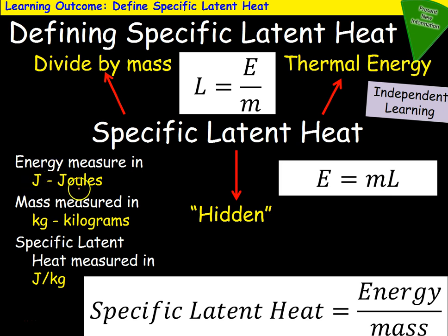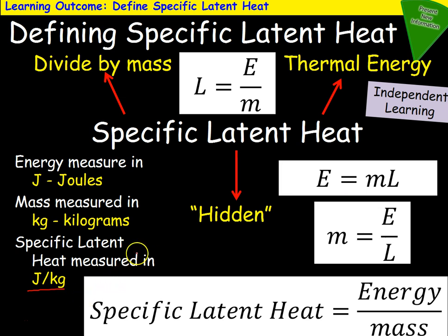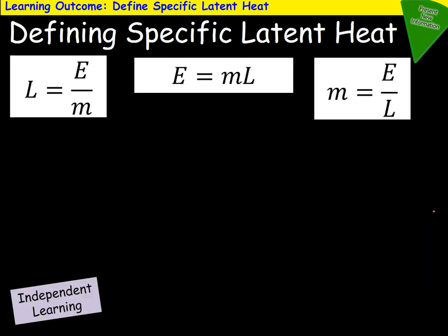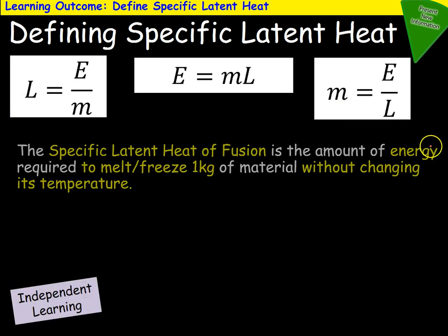Energy is measured in joules. Mass is measured in kilograms. Latent heat is joules per kilogram. The equation can be rearranged: specific latent heat equals energy divided by mass — hence the units are joules per kilogram — and mass equals energy divided by latent heat.